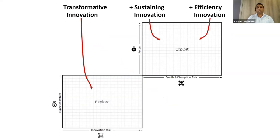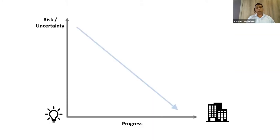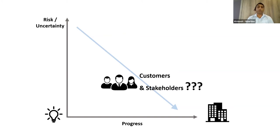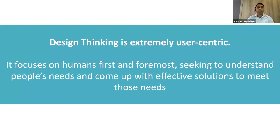When you are trying to do transformative innovation, one of the things that happens is that you will try to reduce the uncertainty and risk of your ideas while progressing toward finding stability and reliability in a market. The best way to do that is to ask for feedback from your customers and stakeholders. And the best method for reducing this uncertainty and risk is design thinking, which is extremely user-centric — it focuses on humans and tries to make sure that your idea really responds to people's needs first.